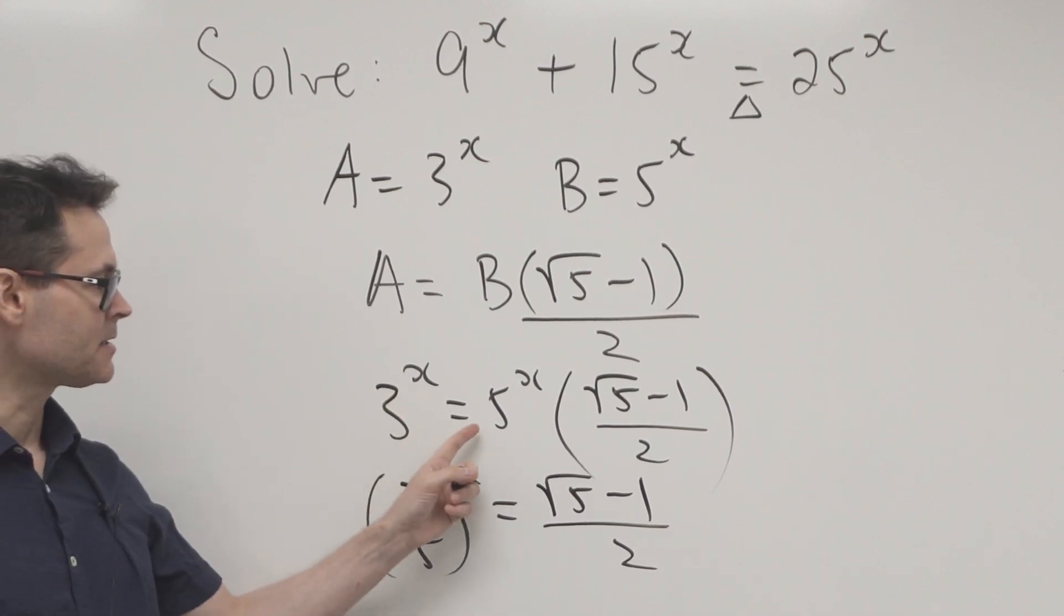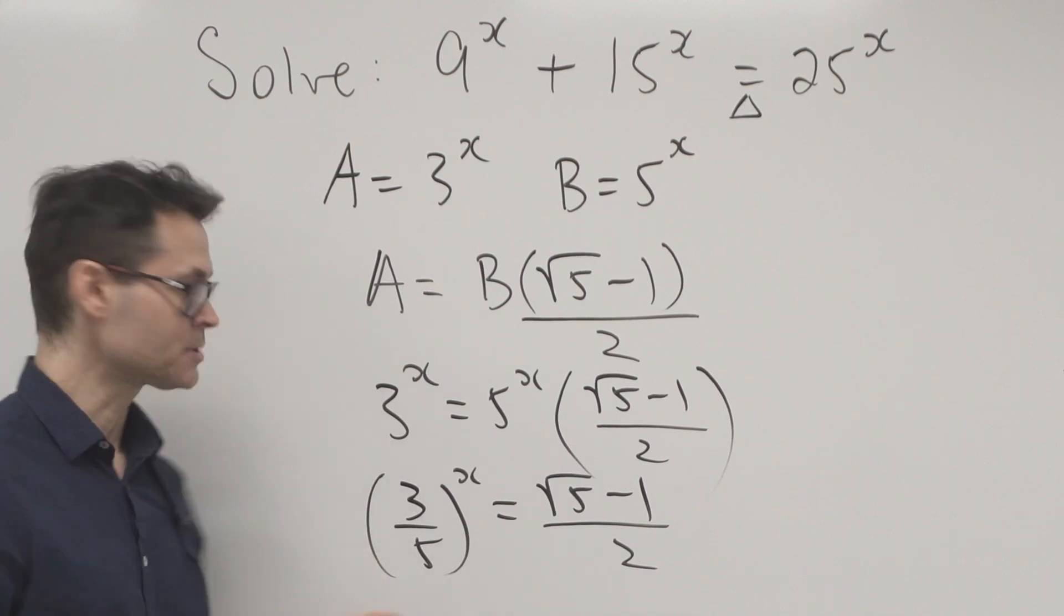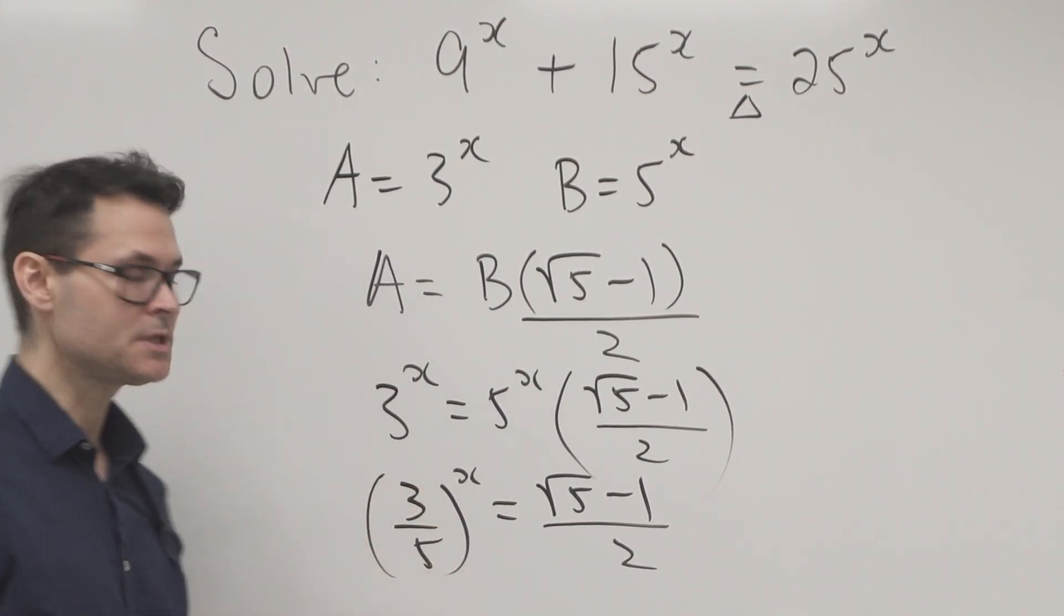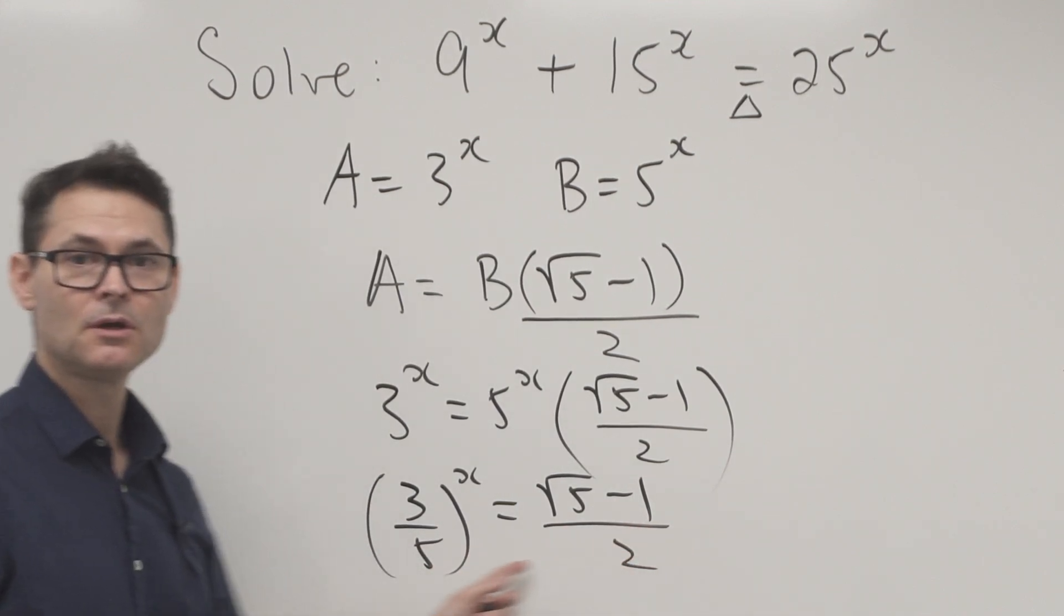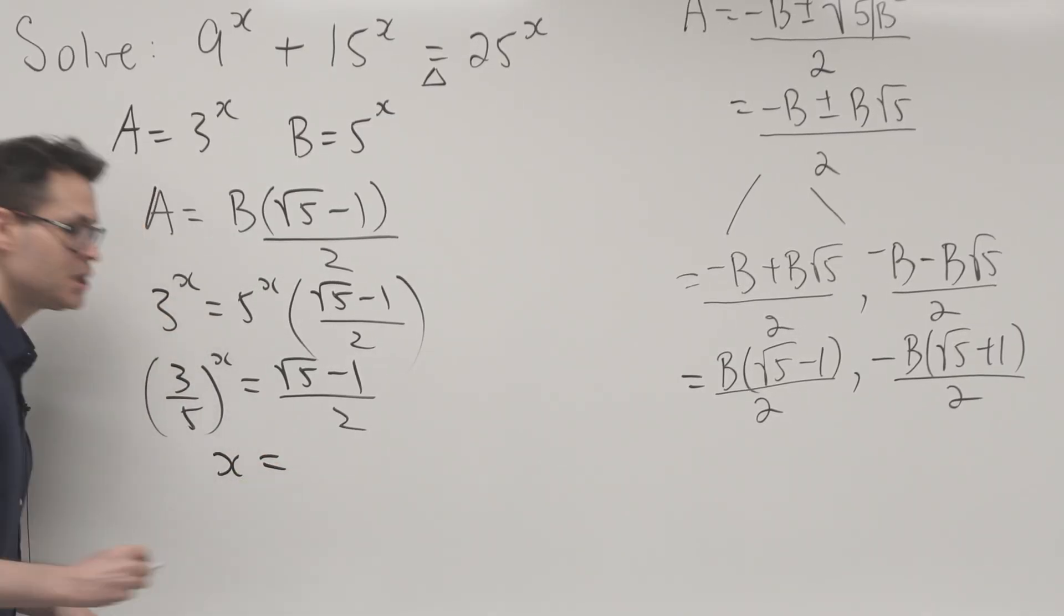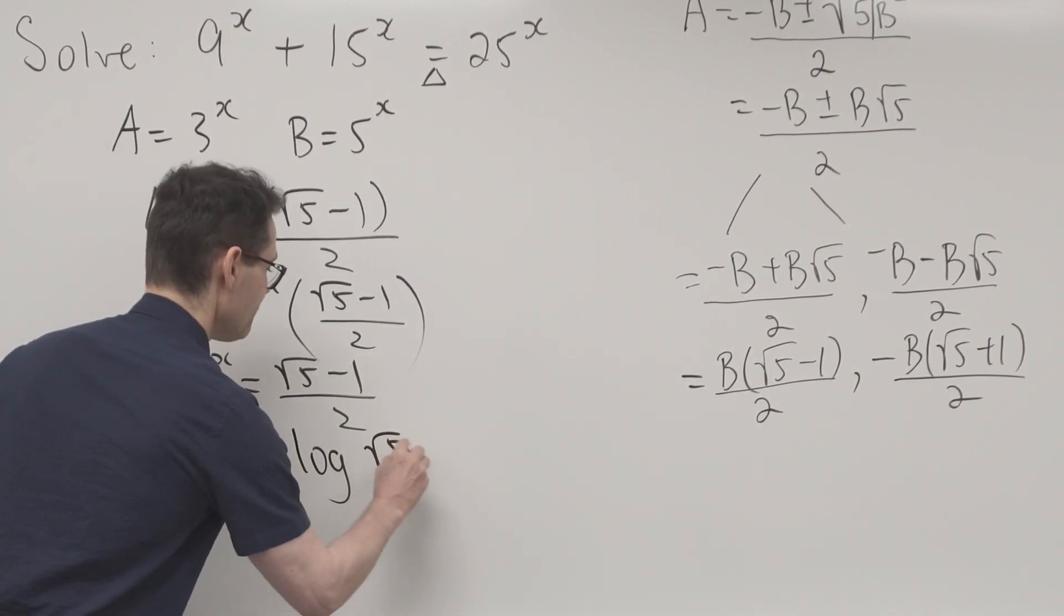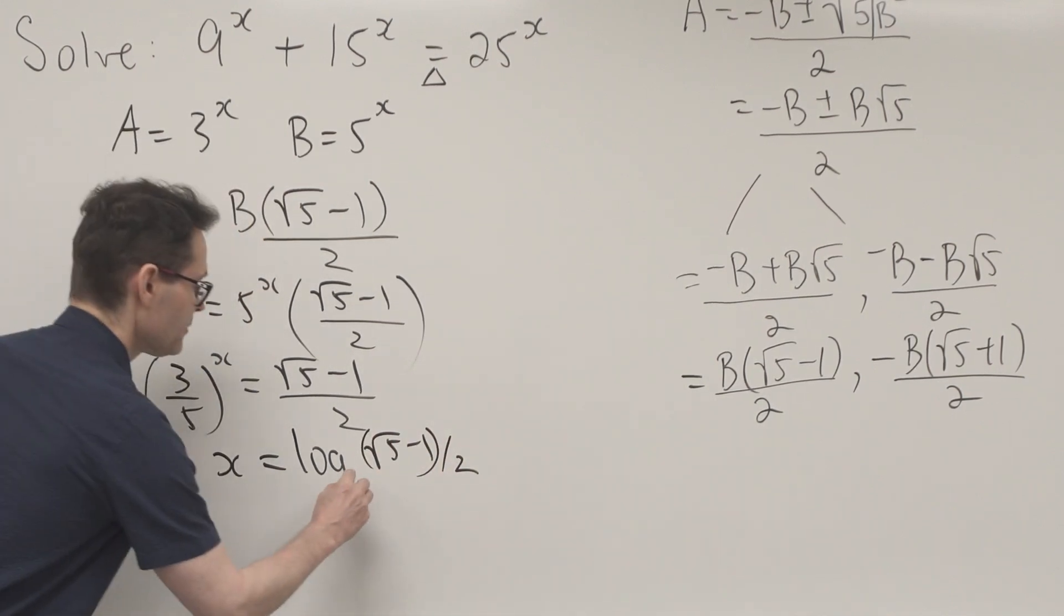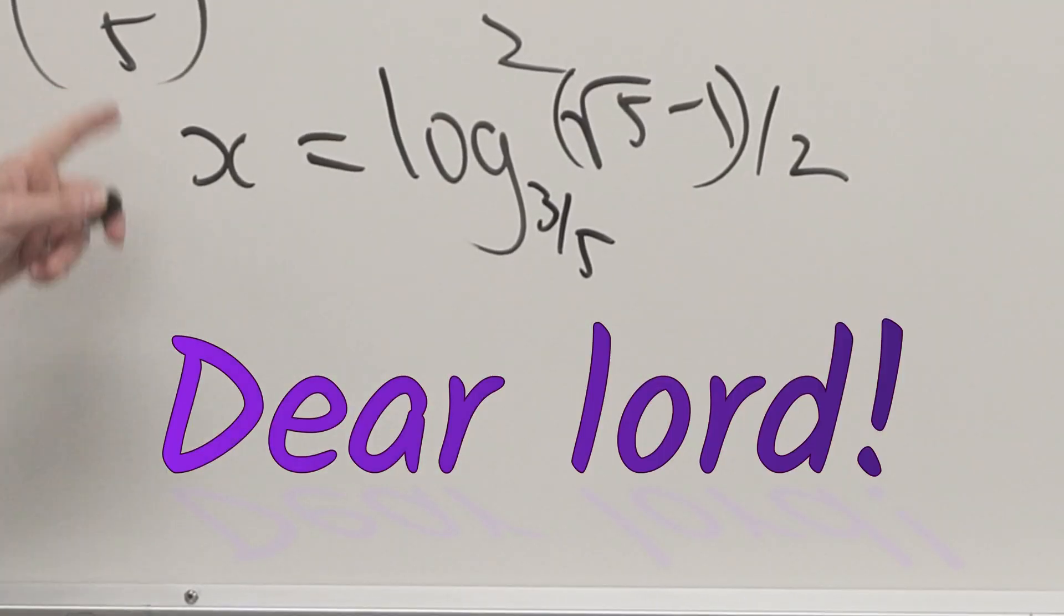Since the exponents are the same, the bases can be combined using exponent rules. Converting from exponential to log form: x = log₍₃/₅₎[(√5 - 1) / 2]. That's the answer.